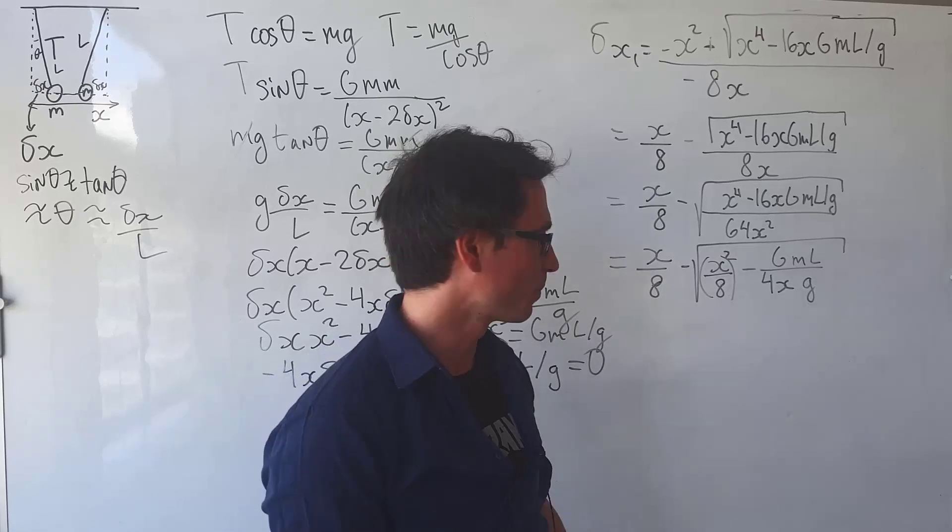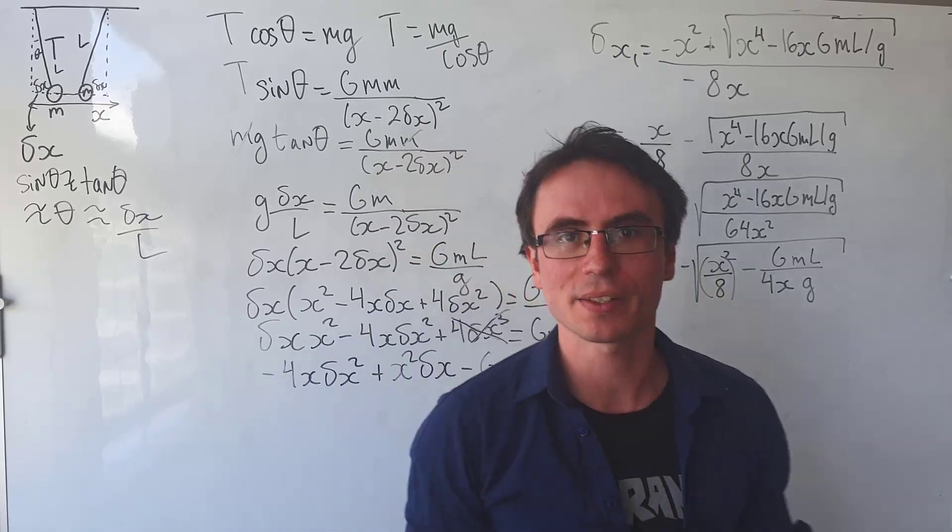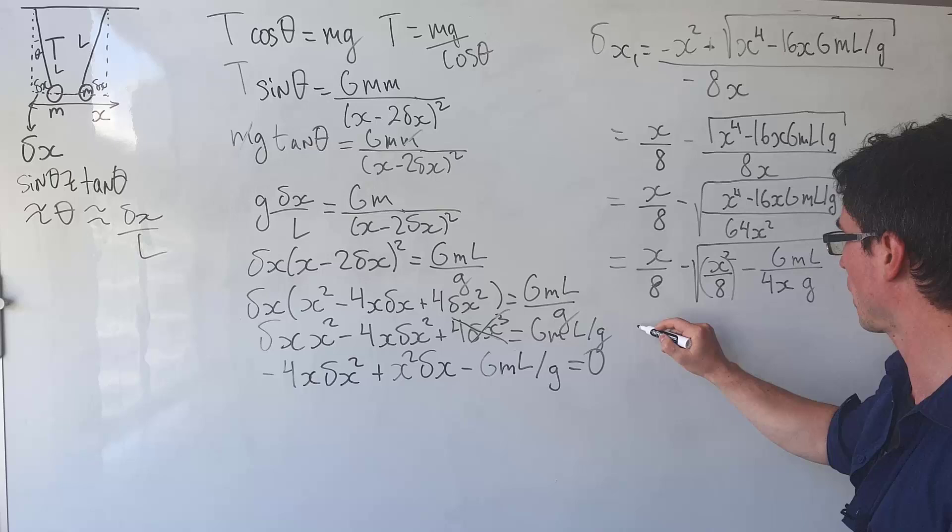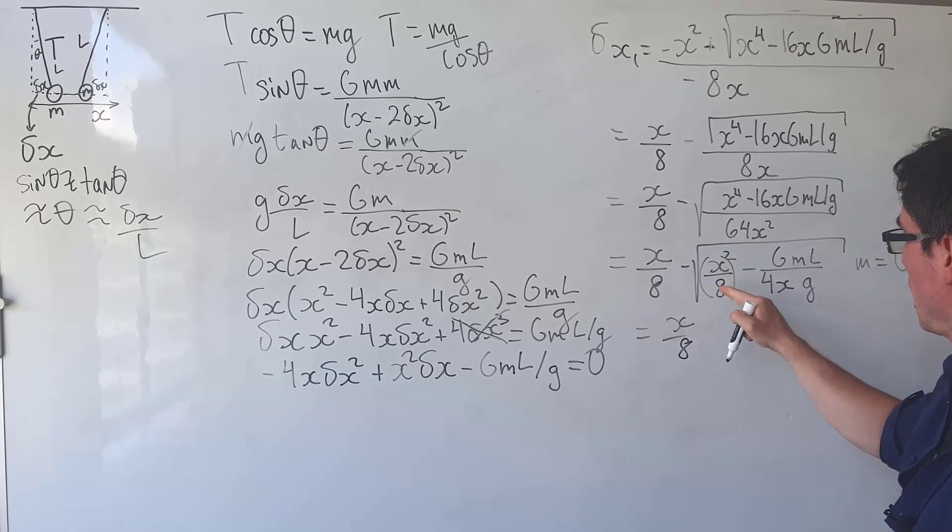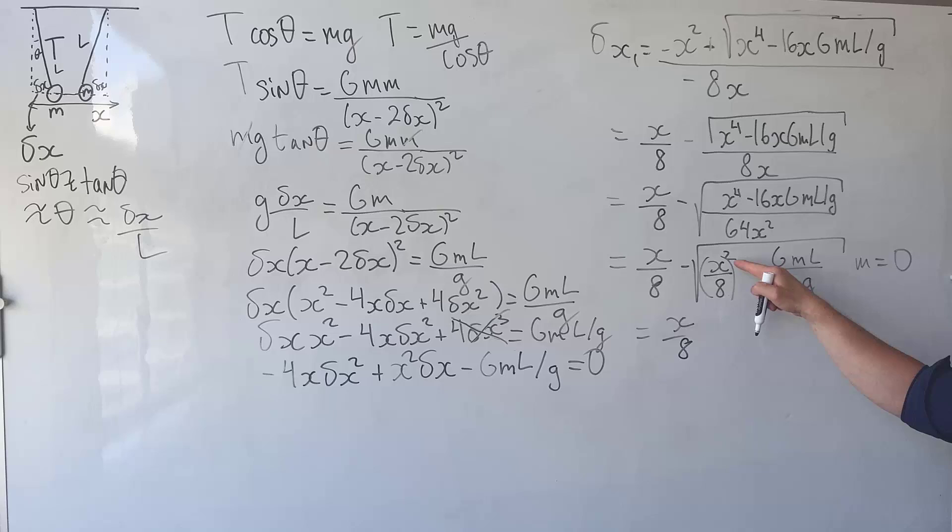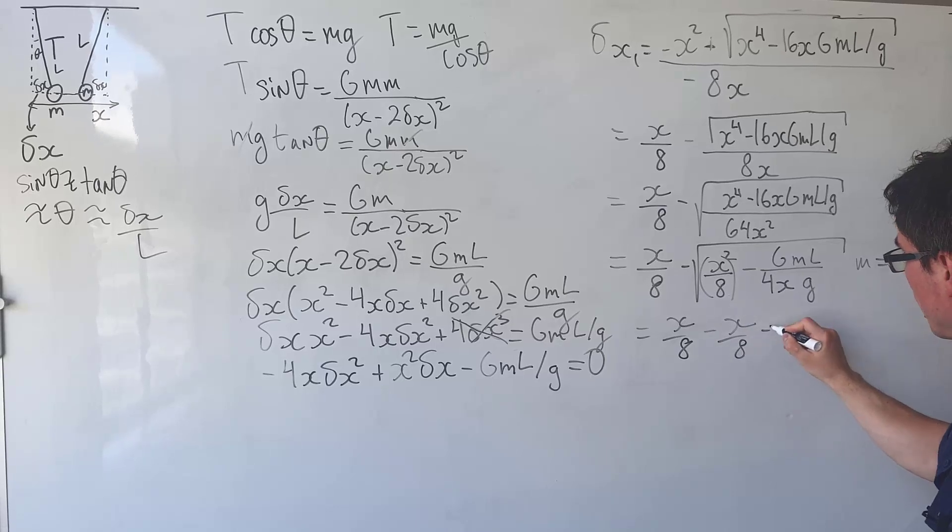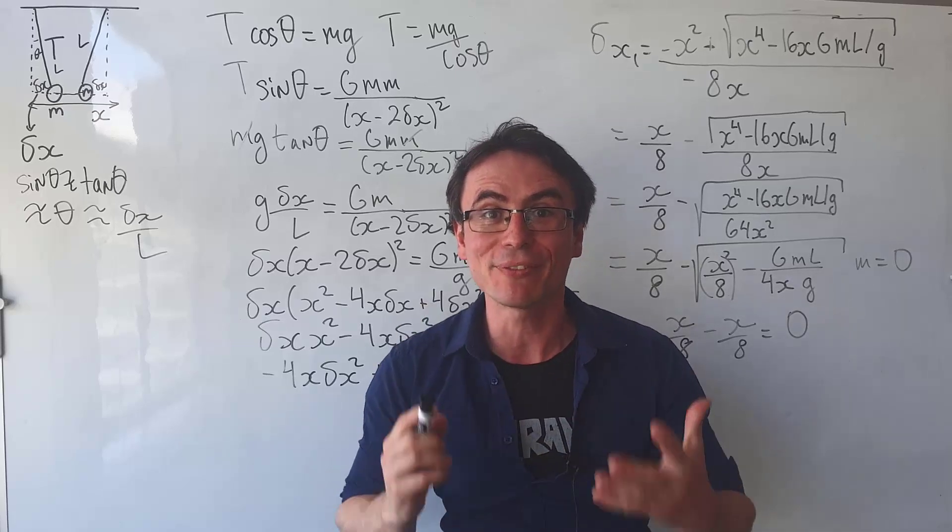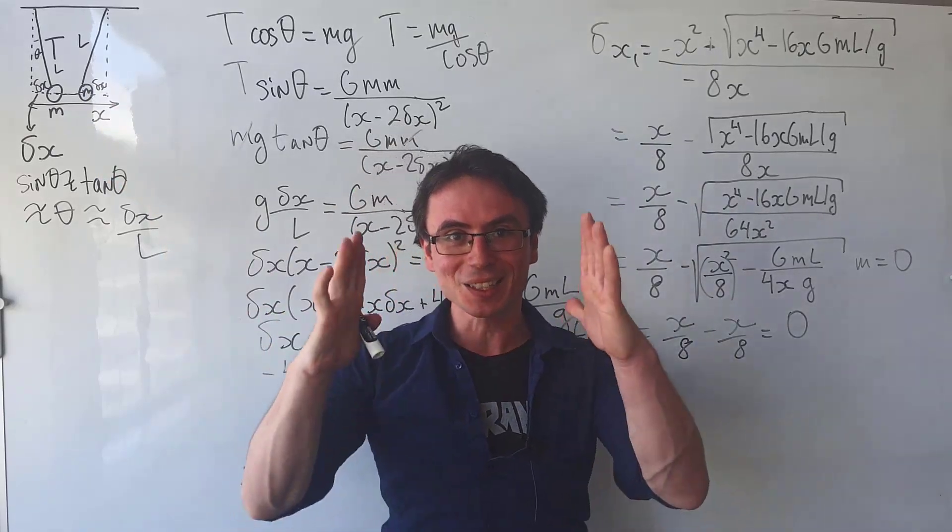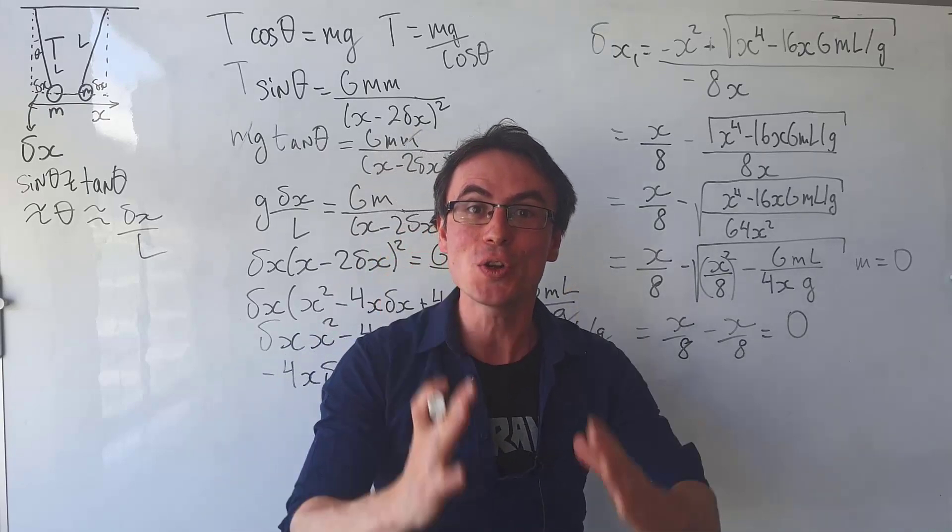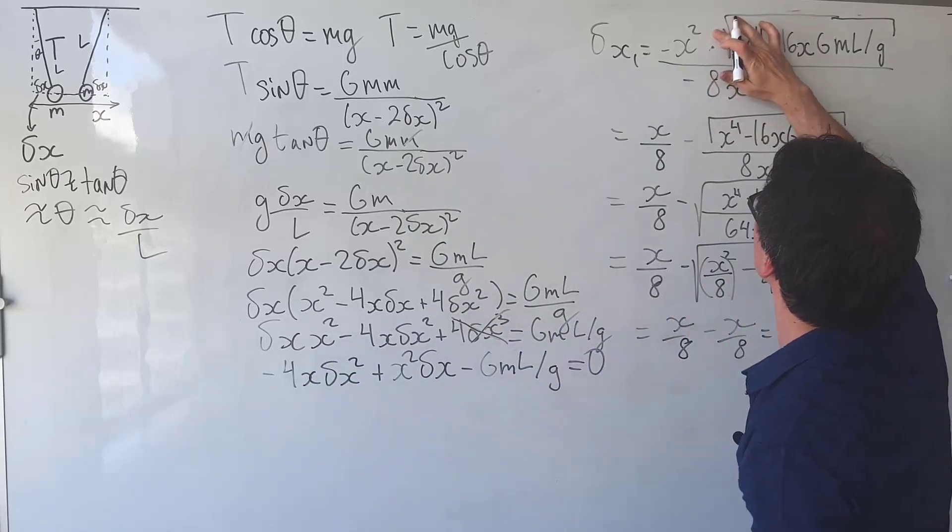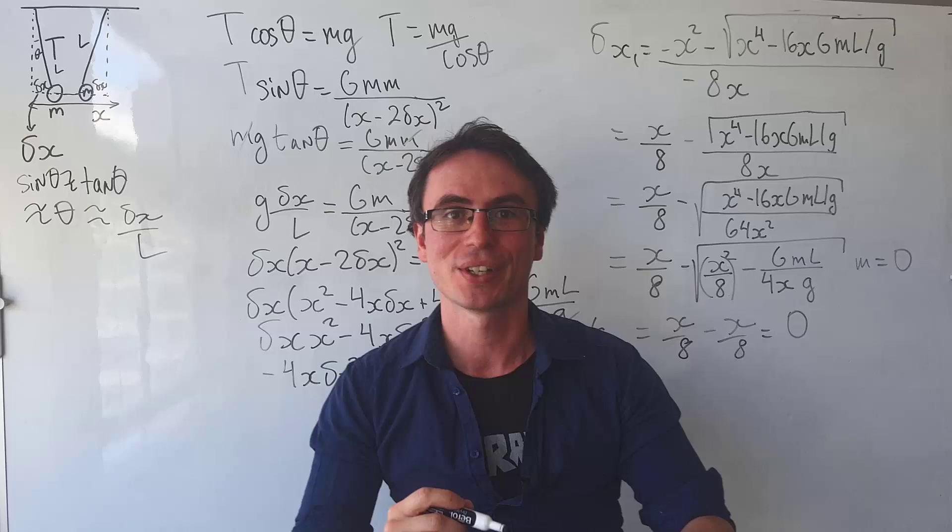Why does this solution actually work? Imagine that the mass is just zero. Then if that's the case, so if m is equal to zero, we actually get x over 8 take away the root of x squared over 8 squared square rooted, so that's minus x over 8, meaning that delta x will be zero if the mass is zero. Well that makes physical sense because it's the presence of mass that causes the deflection. This condition is not met with the second root if we were to just change this to a negative sign.